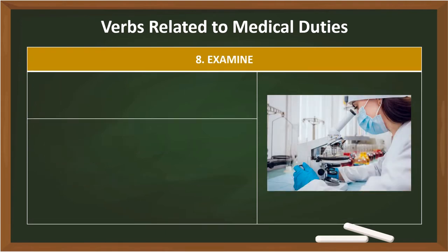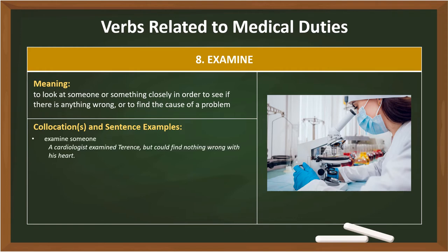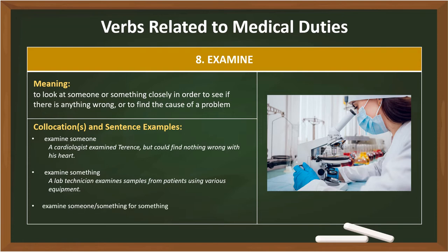8. Examine. Meaning: to look at someone or something closely in order to see if there is anything wrong, or to find the cause of a problem. Collocations: Examine someone — A cardiologist examined Terrence but could find nothing wrong with his heart. Examine something — A lab technician examines samples from patients using various equipment. Examine someone/something for something — They examined her blood for the presence of bacteria.